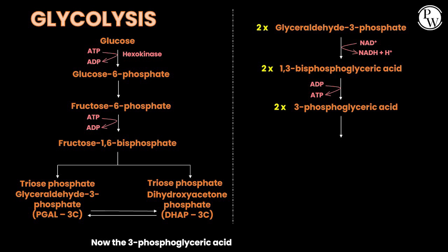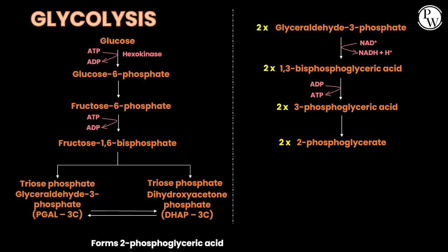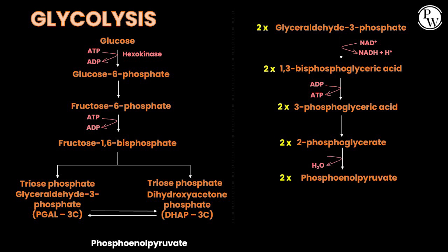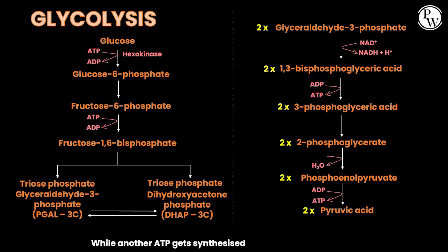The 3-phosphoglyceric acid forms 2-phosphoglyceric acid, which further forms phosphoenol pyruvate. Phosphoenol pyruvate then forms pyruvic acid, while another ATP gets synthesized.